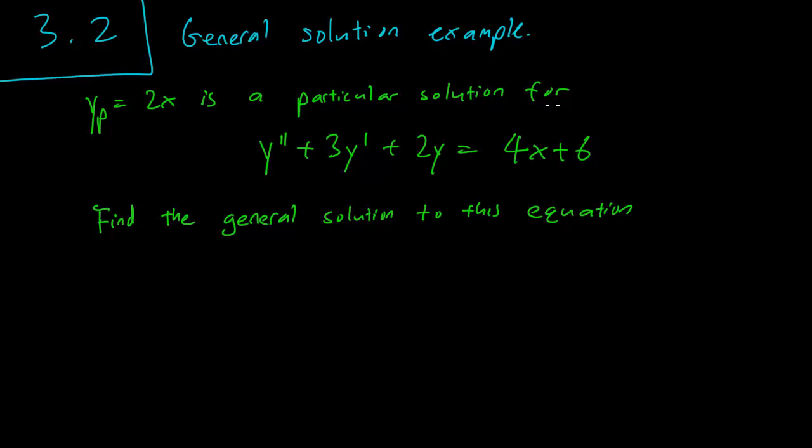So let's start. You can first check that this solution works, and it's not too difficult to do that. y double prime is 0, y prime is 2, so you get 6, and you do get 4x plus 6, so that works.